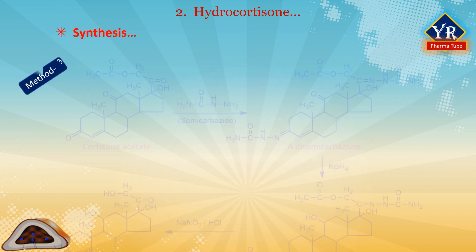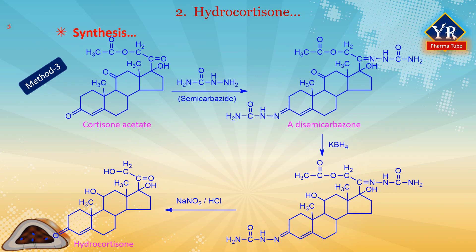Hydrocortisone can also be synthesized from cortisone acetate. Cortisone acetate is treated with semicarbazide, during which the disemicarbazone is formed as a result of a reaction at both carbonyl groups at C3 and C20. The carbonyl group at C11 is reduced by potassium borohydride to an alcohol group, during which the acetyl group on the hydroxyl at C21 is simultaneously removed giving the semicarbazone. By removing the semicarbazide protection using nitrous acid, hydrocortisone is formed.